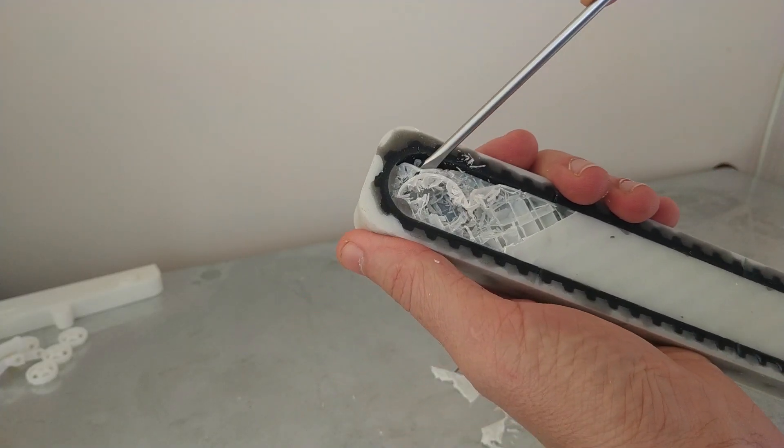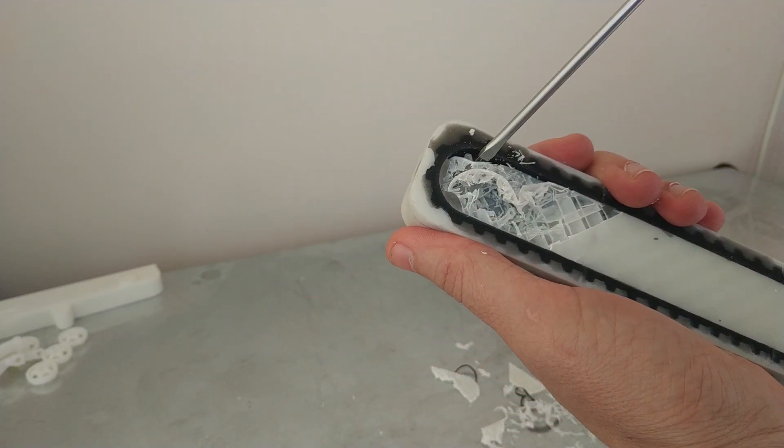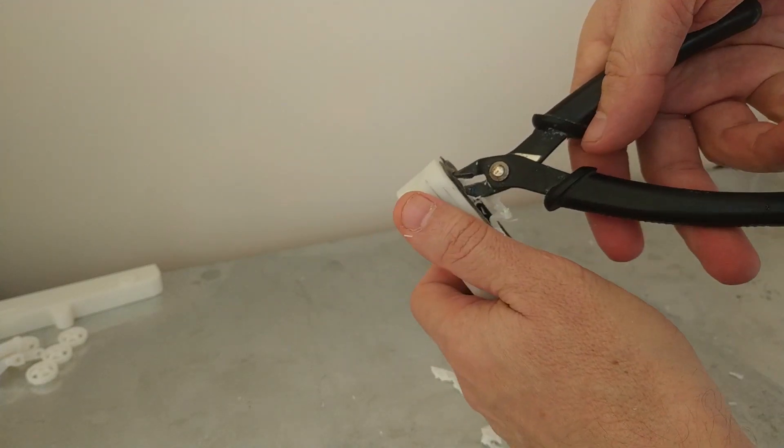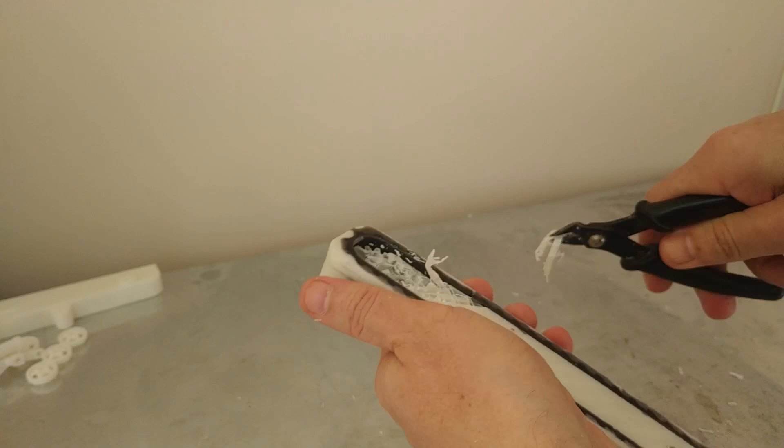After several unsuccessful attempts to remove the center part of the mold, I had to break it open. Only then did I get my rubber track for the RC track-type tractor.